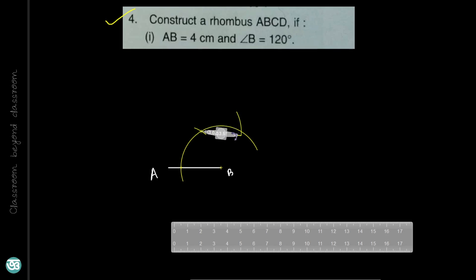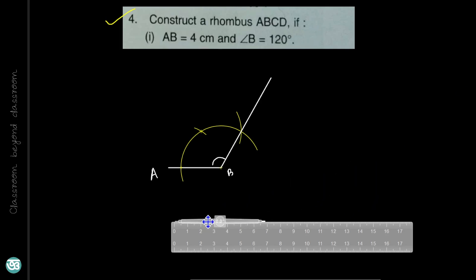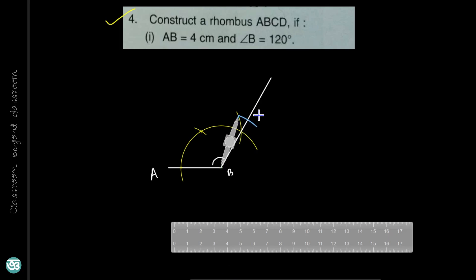Draw a second arc at the same radius. Join point B and this point of intersection — this angle is 120 degrees. Now, since all sides of a rhombus are equal and all sides are 4 cm, take B as center and draw an arc to cut this line at point C. So this is point C.